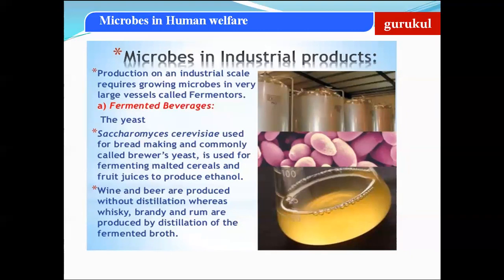Now let us move on to microbes used for industrial products. Microbes are grown on a large scale in very large vessels called fermenters or bioreactors. The first industrial use of microbes is for producing fermented beverages. The microbe used here is yeast — Saccharomyces cerevisiae — which is used for fermentation of malted cereals and fruit juices to produce ethanol. For this reason, it is also called brewer's yeast.